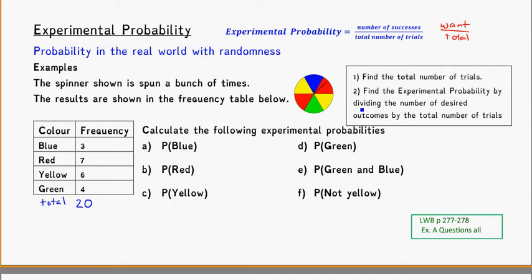So to find the experimental probability, we're dividing the number of the desired outcomes by the total number of trials. So now we know the total was 20. So the shorthand P(blue), that means the probability of it landing on a blue. Well how many times did it land on blue? It landed on it 3 times, so we say 3 out of 20.